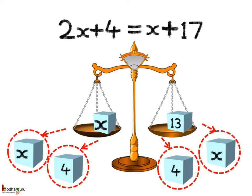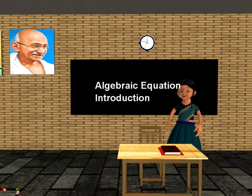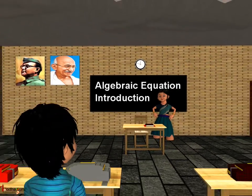Solving an equation is easy and fun too. It is just like balancing the weights on the two pans of a weighing balance, either by adding, subtracting, multiplying, or dividing equal weights on both sides of the pans, so they are balanced. That is all for now. Bye-bye children.